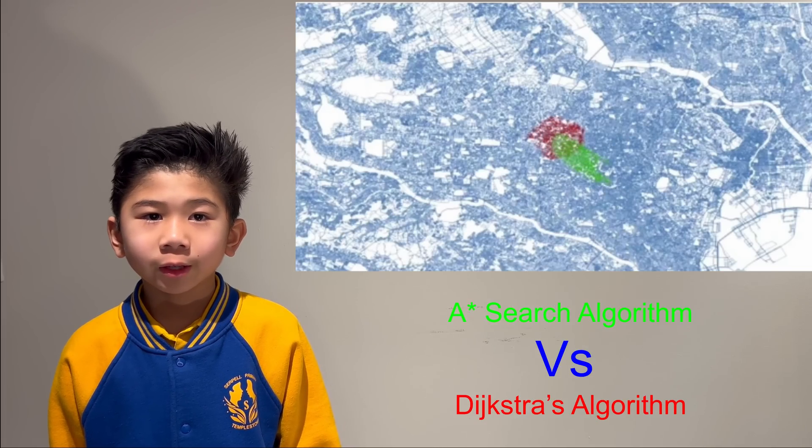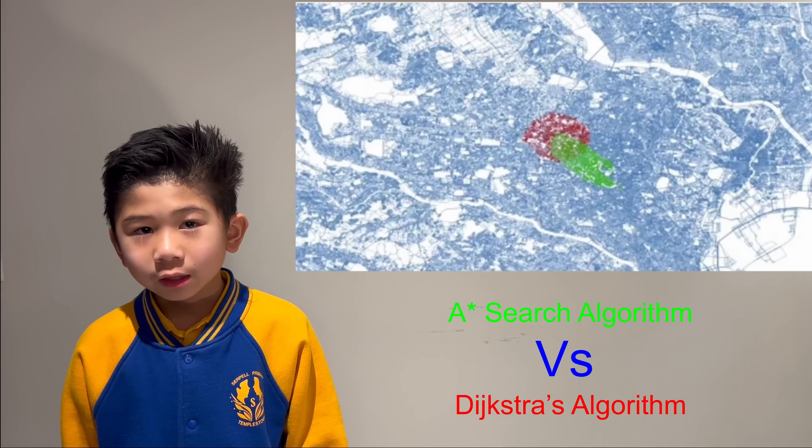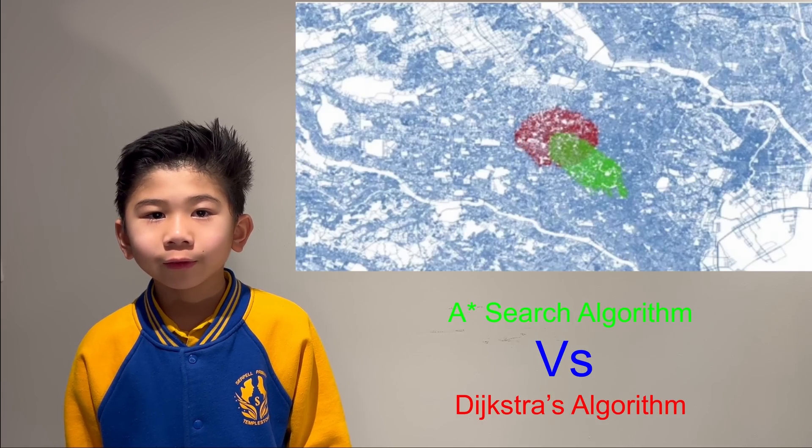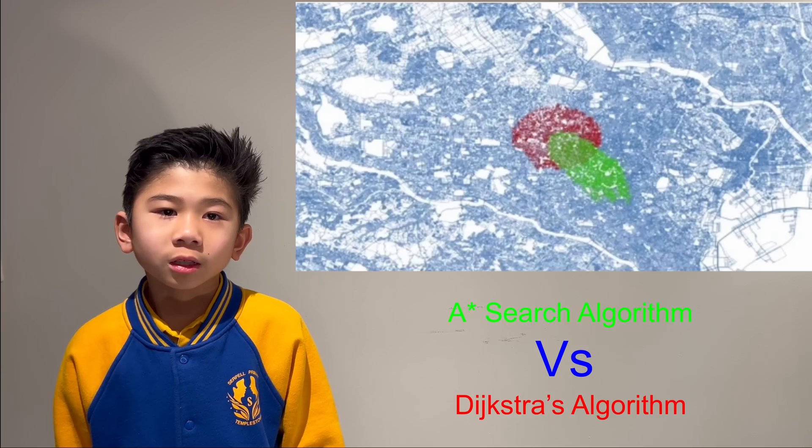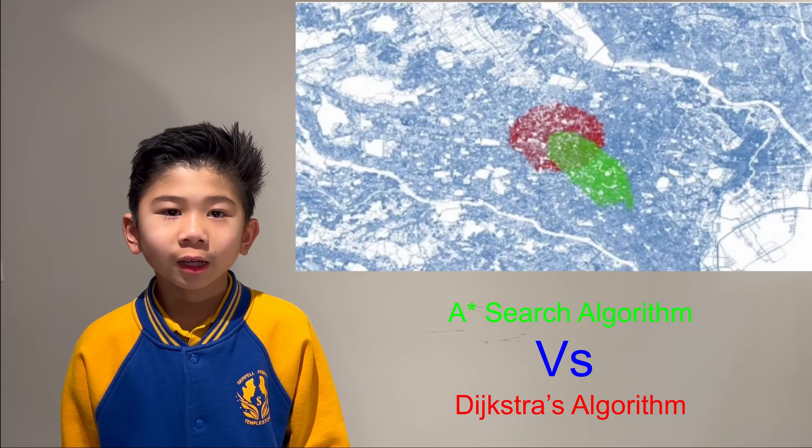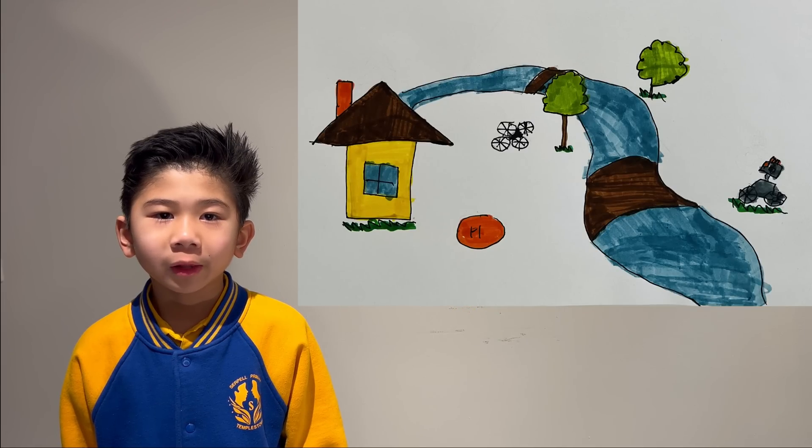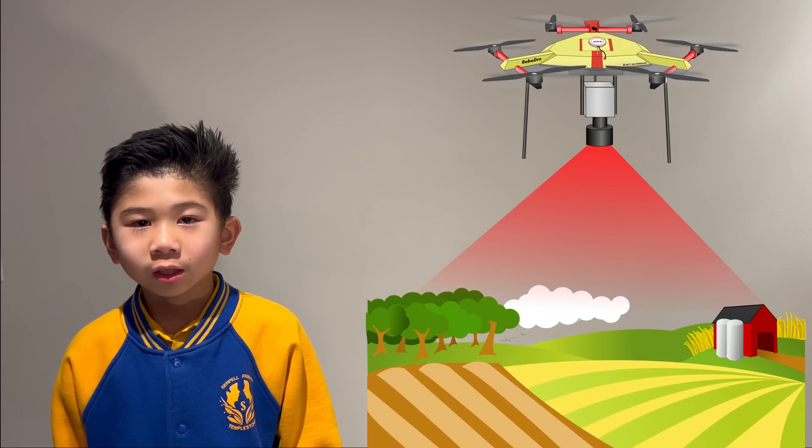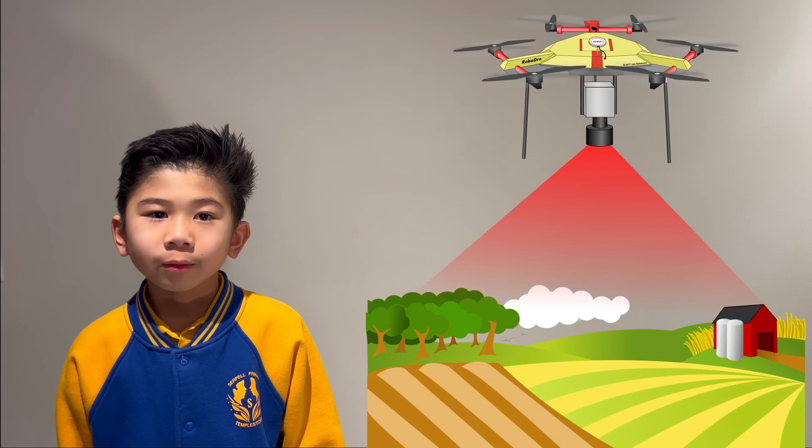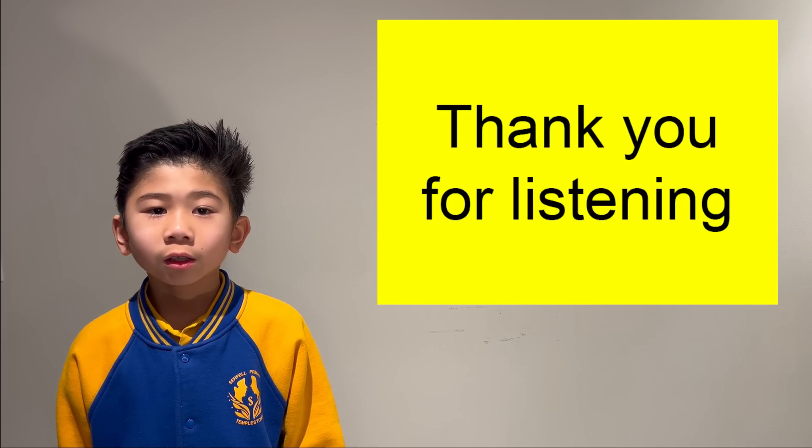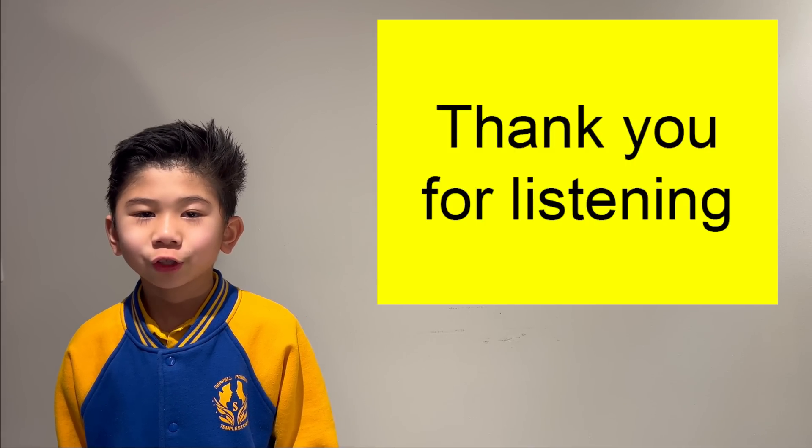The future scope of work should include comparison between A-star informed search algorithm versus uninformed search, such as Dijkstra's algorithm, along with real-world applications, such as the navigation of unmanned drones and vehicles. And that concludes my presentation.